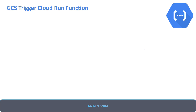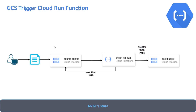We'll simulate a project where one user uploads a file to a storage bucket, that file upload triggers a Cloud Function, and this function has a Python script to check the file size. If the file size is greater than 2 MB, it will move the file to another bucket for invalid or large files. If the size is less than 2 MB, the file is good for processing and will stay in the same bucket — no action taken.